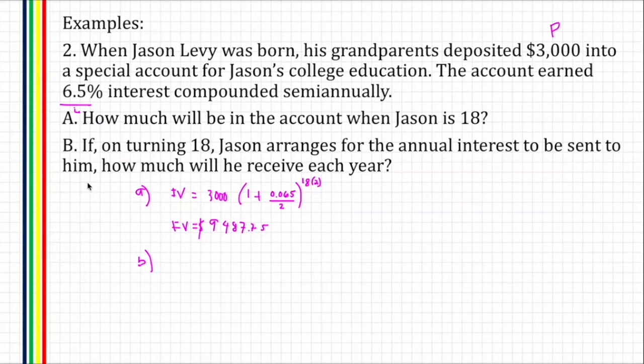To solve letter B, we'll take the future value as the new present amount or the principal amount. So the new principal amount now is $9,487.75.